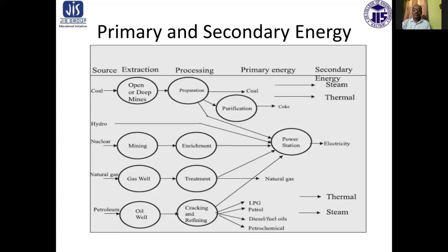For nuclear energy, nuclear materials found through mining require enrichment. In a nuclear power plant, power is generated from the enriched fuel, and electricity is produced. Uranium-238 and thorium are the primary raw materials.